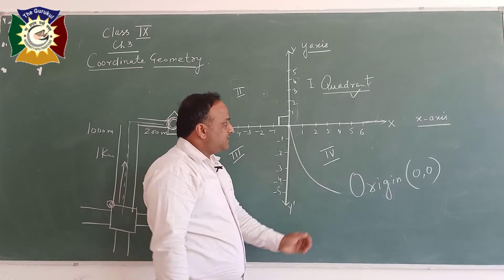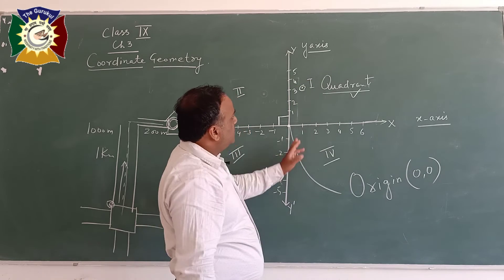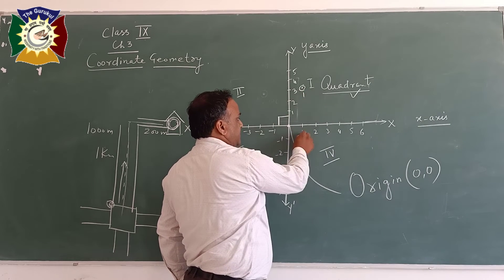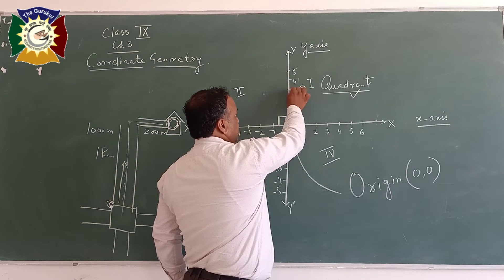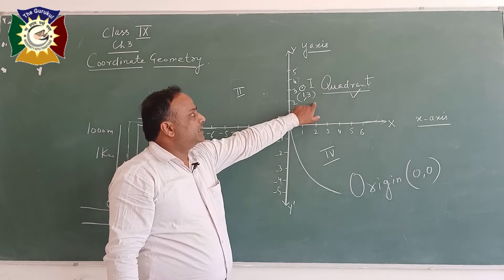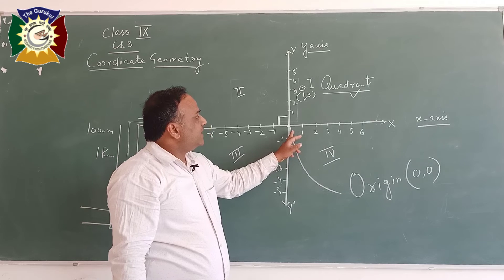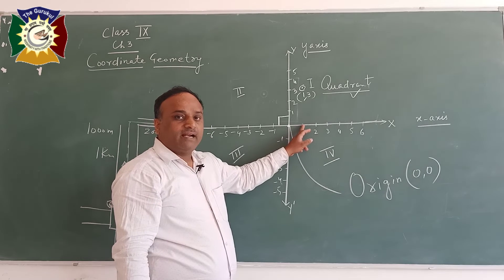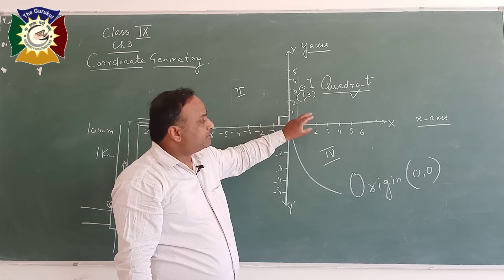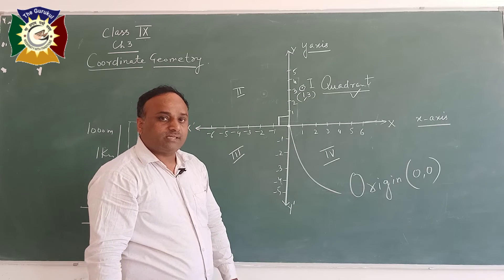Similarly, here you can see, if this is a dot, what is the position of this dot? First of all, we can write x-axis coordinate: 1 and 3. So this dot position is (1, 3). It means that on the positive side, we have to come one distance, and then we have to move towards the y-axis side up to 3 steps - 1, 2, 3. So this is the position of this dot.